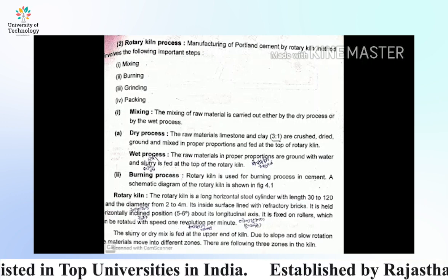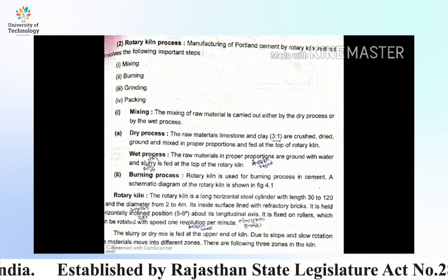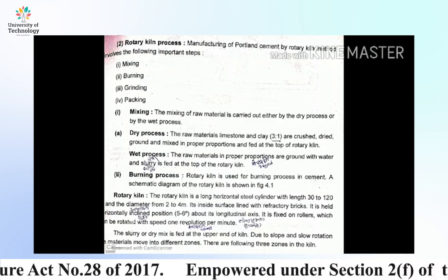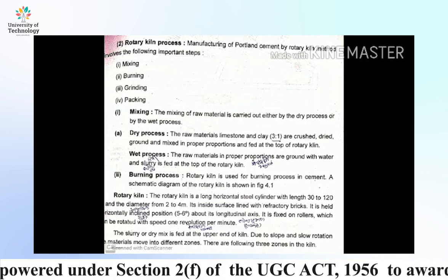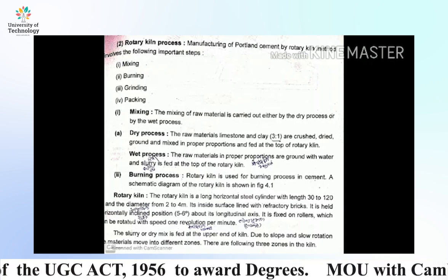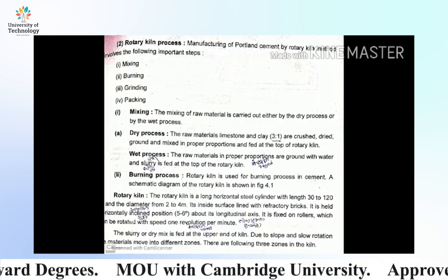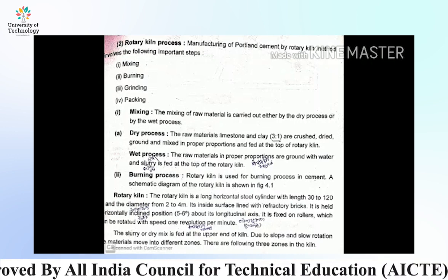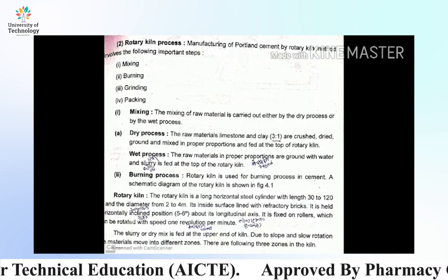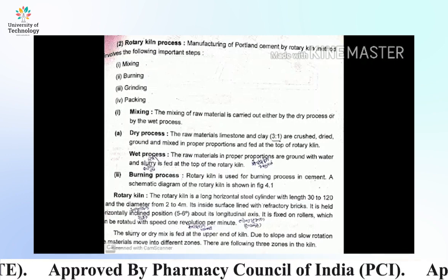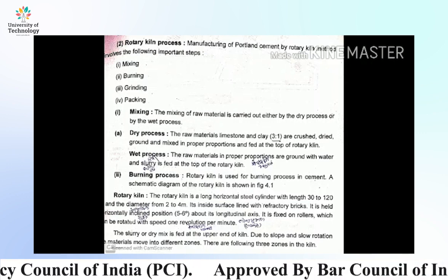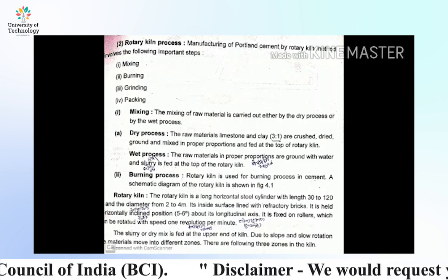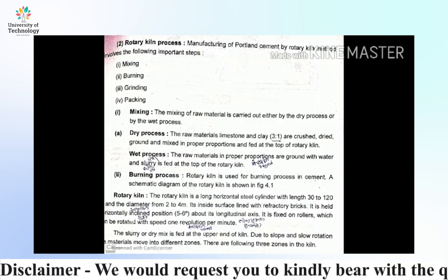Mixing: the mixing of raw materials is carried out either by the dry or wet process. In the dry process, the raw materials — limestone and clay in a 3:1 ratio — are crushed, dried, ground, and mixed in proper proportions and fed into the top of the rotary kiln. In the wet process, the raw materials in proper proportions are ground with water and the resulting slurry is fed into the top of the rotary kiln.